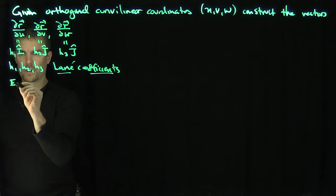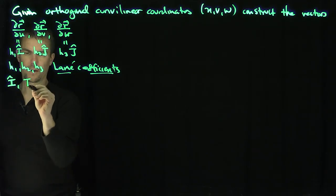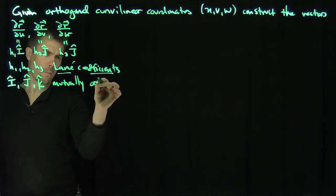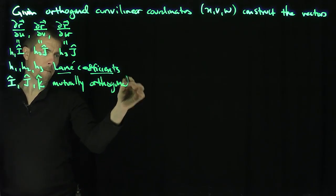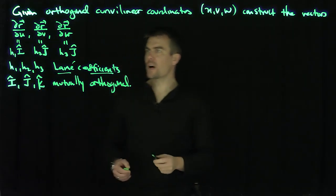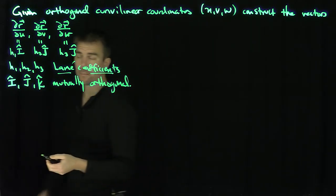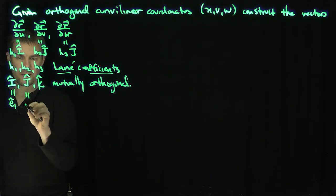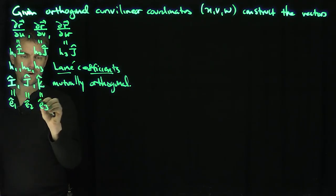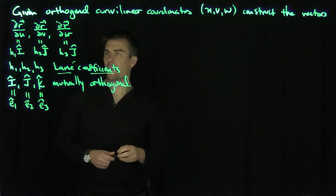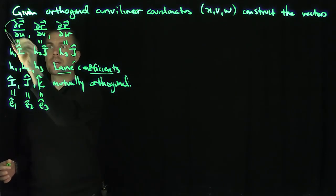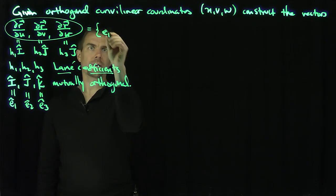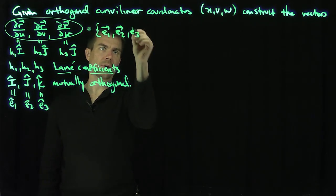The unit vectors i, j, and k are mutually perpendicular. What these partial derivative vectors correspond to is a covariant basis. In our covariant/contravariant framework, I'm going to call these e1, e2, and e3 — so these vectors form my covariant basis e1, e2, and e3.